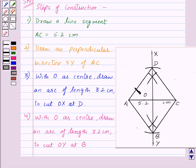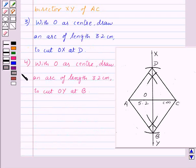So, we got the required rhombus ABCD. So, let's write our last, that is, fifth point of construction. Join AB, BC, CD and DA.